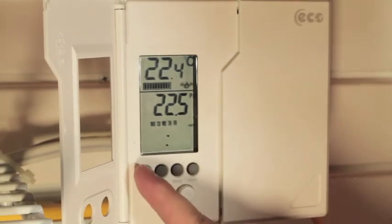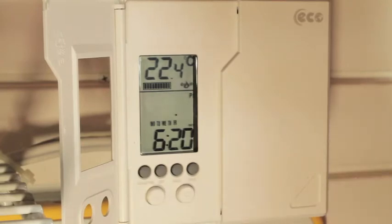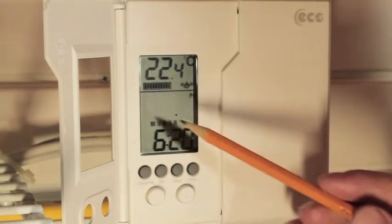To switch between the temperature and time, press the usage button. Whichever you're about to switch will be flashing on screen.